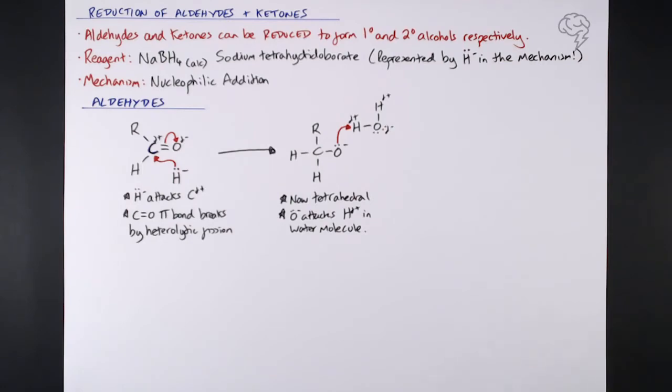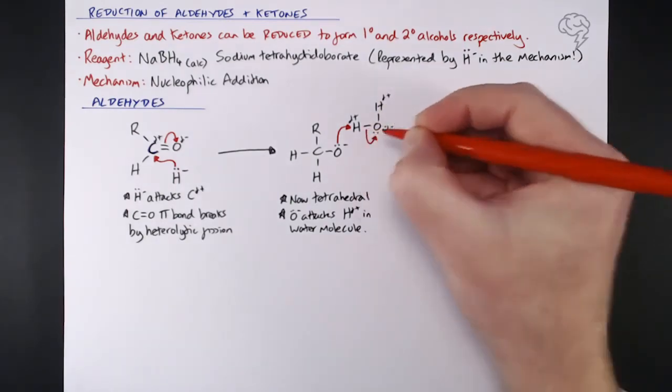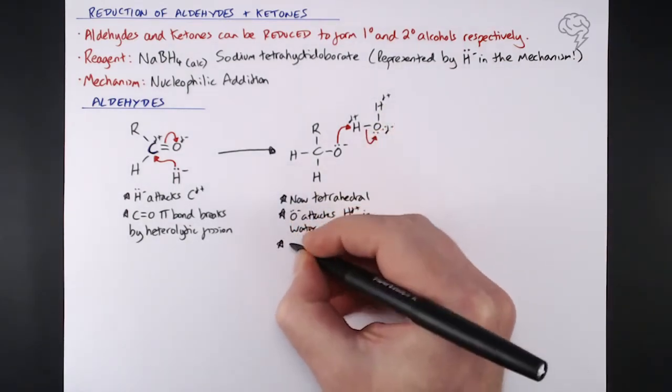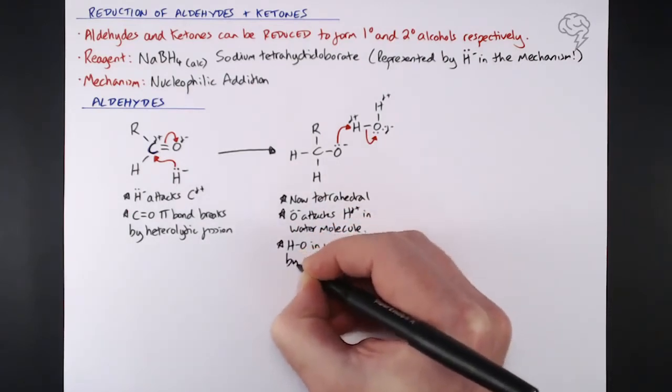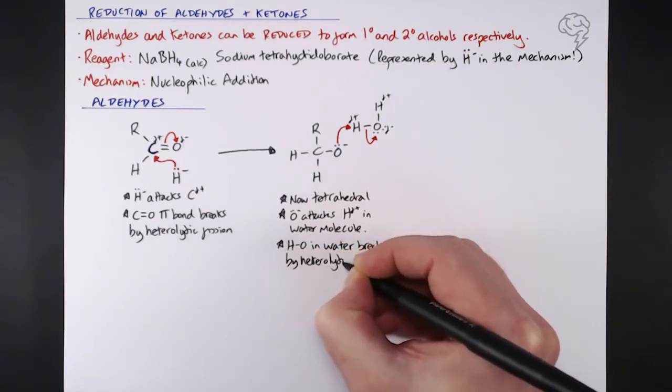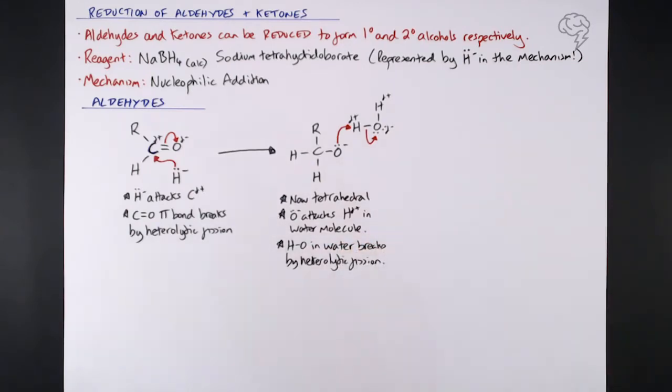That hydrogen can't maintain two bonds, so again something has to give. What gives is the hydrogen to oxygen bond in the water - that HO bond in water breaks by heterolytic fission, and that leaves an OH minus just kind of floating around, so it makes the solution more alkaline.